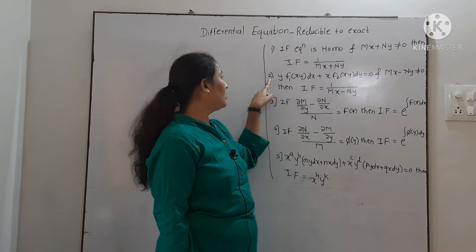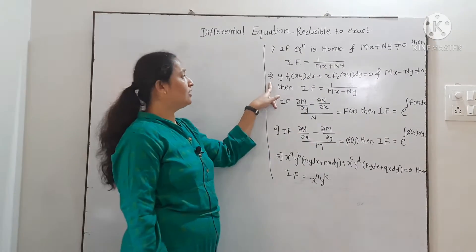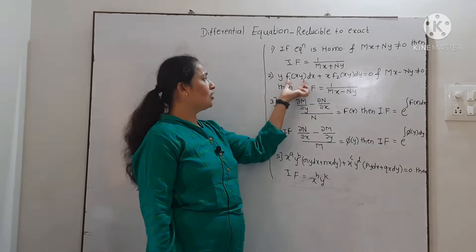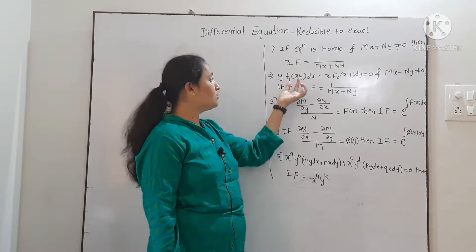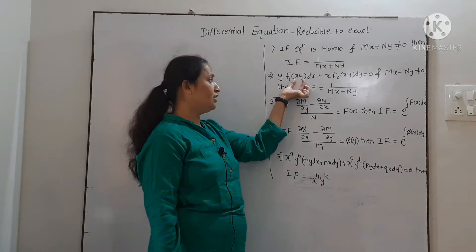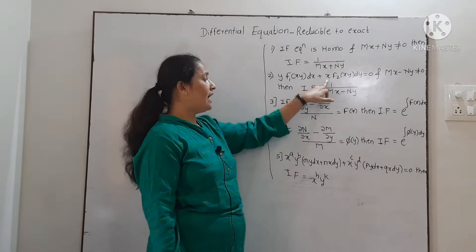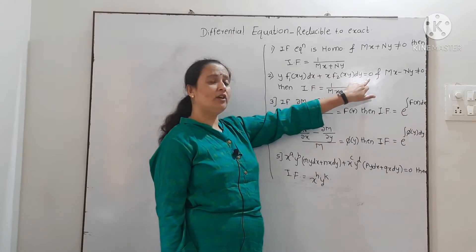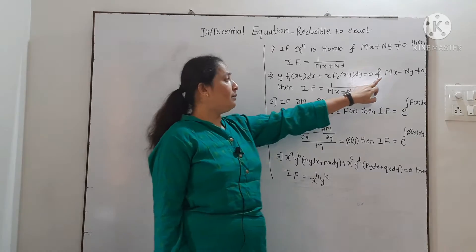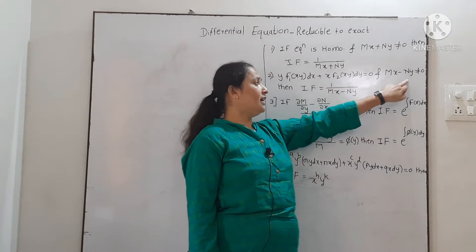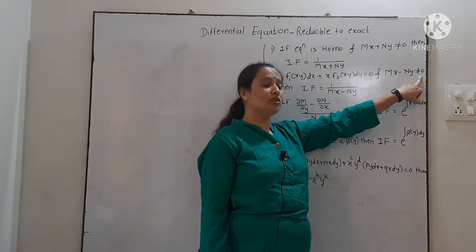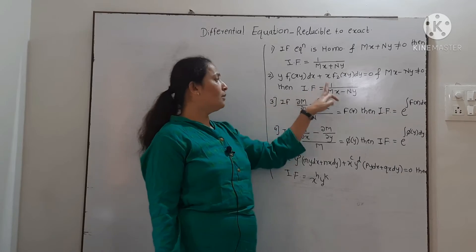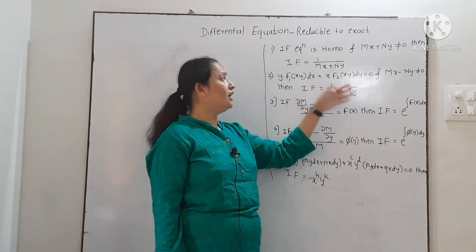Second rule is: if the given differential equation is in the form y into function of x,y — it is a product — x into y dx plus x into function of x,y dy equal to 0. And mx minus ny is not equal to 0, then the integrating factor will be 1 upon mx minus ny.